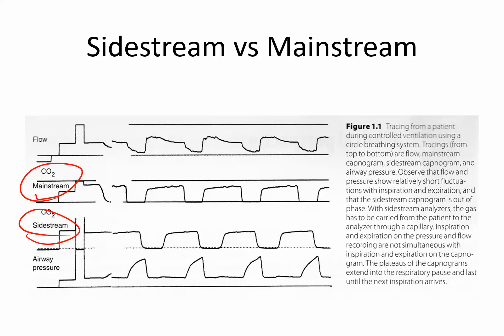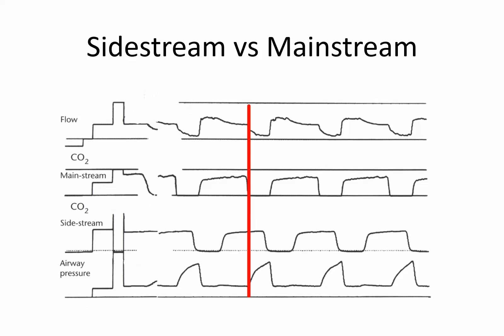This figure compares tracings from a mainstream and a sidestream capnometer, with the bottom trace showing airway pressure. When inspiration starts — indicated by rising airway pressure — the mainstream capnometer gives an immediate loss of CO2, which makes sense because the gas flowing past it should be devoid of CO2. There is a time lag, however, with the sidestream capnometer. You know this because when you've struggled to intubate a patient and are unsure if the tube is in the trachea or esophagus, it can feel like it takes forever for the CO2 waveform to appear.